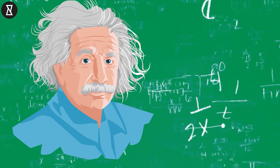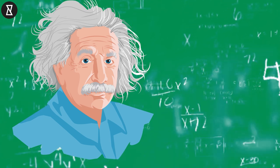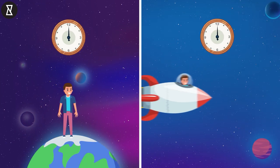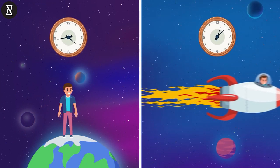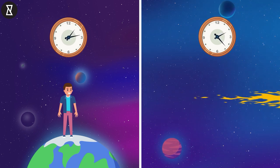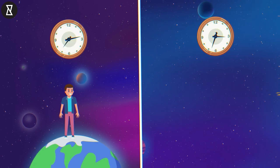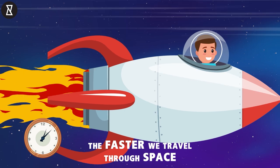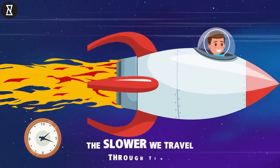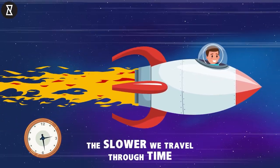A 20th century scientist, Albert Einstein, developed a theory called special relativity. Einstein's theory of special relativity says that time slows down or speeds up depending on how fast you're moving relative to something else. The faster we travel through space, the slower we travel through time, at least to a stationary observer.